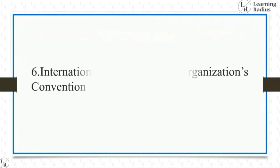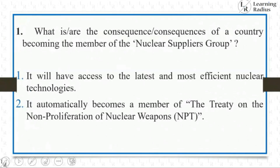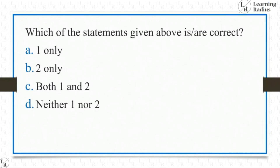Let's come to the first question. What is the consequence of a country becoming a member of the Nuclear Suppliers Group? Statement 1: It will have access to the latest and most efficient nuclear technologies. Statement 2: It automatically becomes a member of the Treaty on the Non-Proliferation of Nuclear Weapons, NPT. Which of the statements given above is correct? One only, two only, both one and two, or neither one nor two?